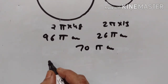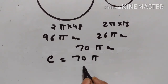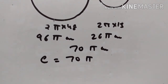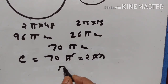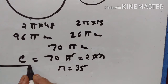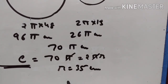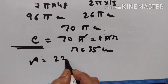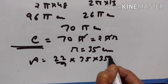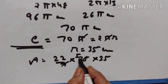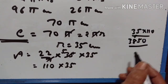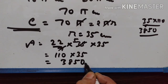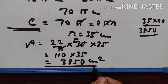The circumference of the new circle equals 70π. So 2πr = 70π, giving r = 35 cm. The radius of this circle is 35 cm. We have to find the area: area = (22/7) × 35 × 35. 7 goes into 35 five times, so 5 × 22 = 110, and 110 × 35 = 3,850 square centimeters. That is the area of this circle.